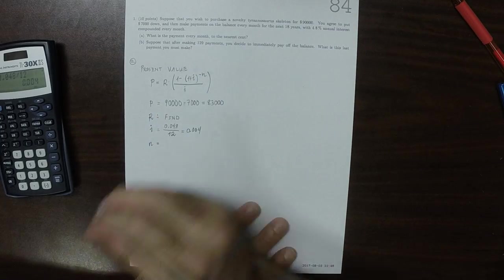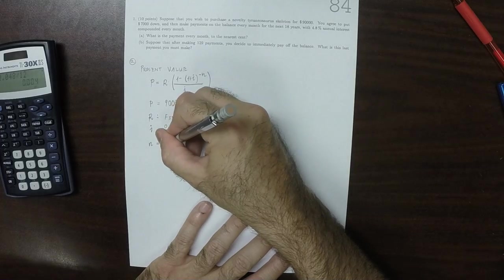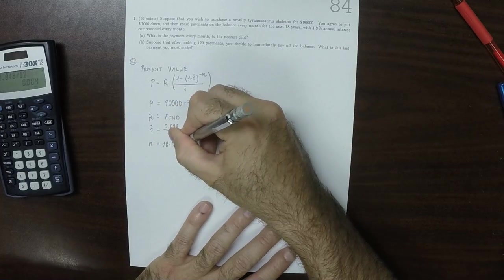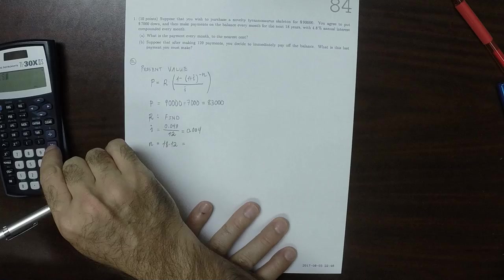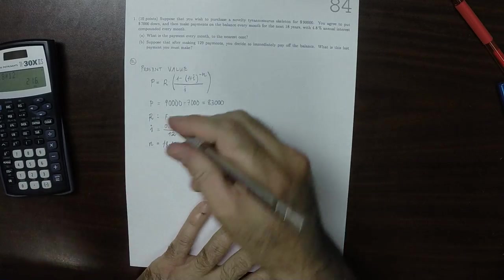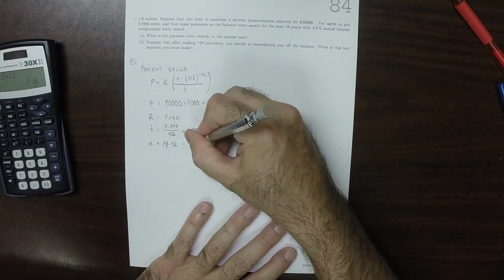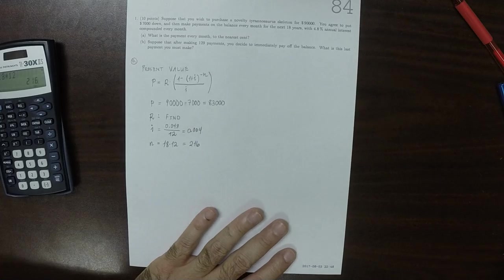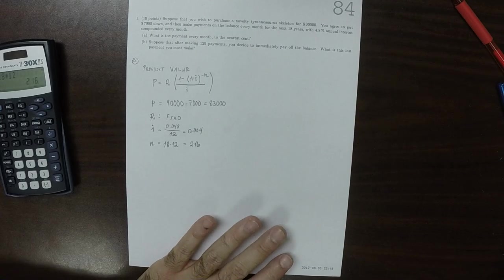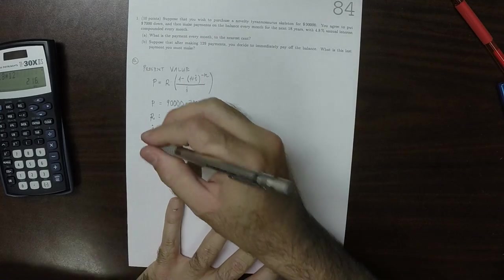N for 18 years. So that's 18 years multiplied by 12 months per year, which is 216. So 216 sequential payments. We're supposed to find R.